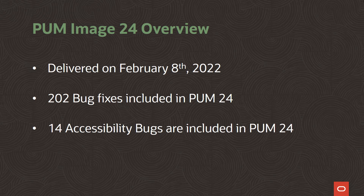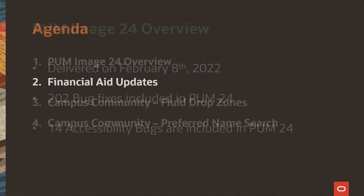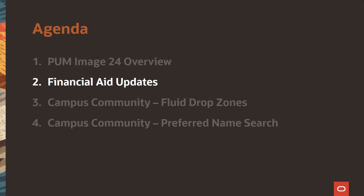There are 202 bug fixes and 14 accessibility bugs included in PUM Image 24.